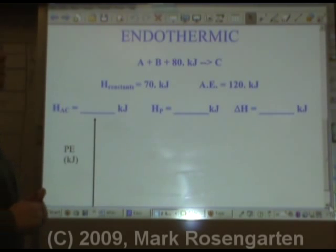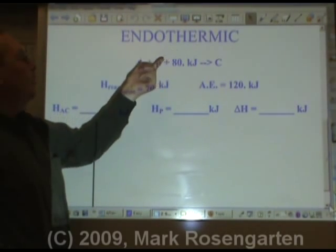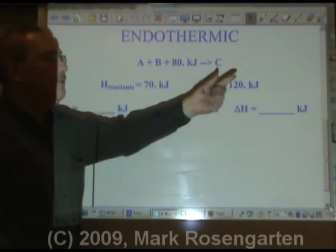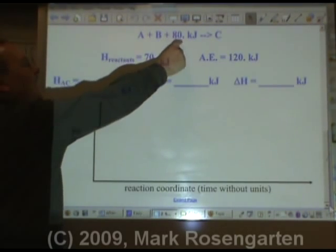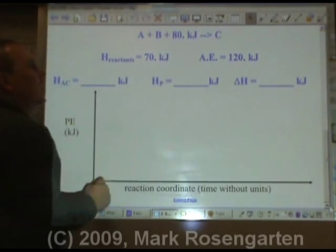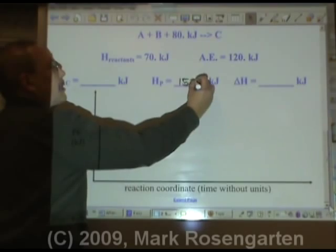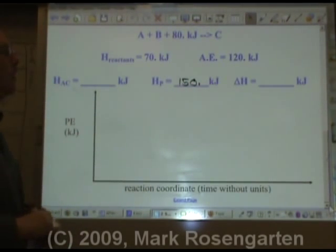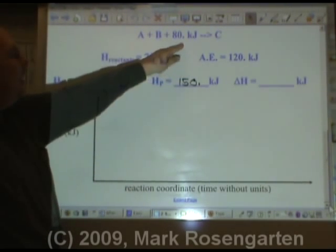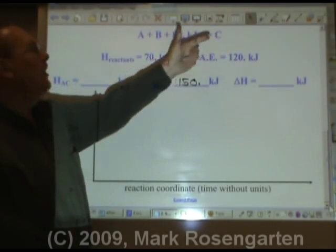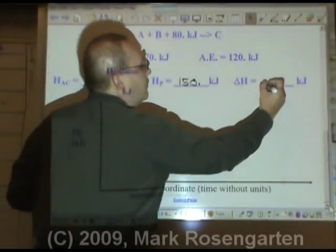Now for an endothermic reaction. In endothermic reactions, potential energy is absorbed — the reactants gain that potential energy and form products. If the reactants had 70 kilojoules and you had to add 80 kilojoules to make the products, 70 plus 80 is a total of 150 kilojoules for the products. The law of conservation of energy says 150 equals 150. The change in heat was positive 80 kilojoules.